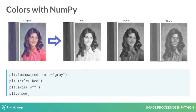We can also display them using the gray color map, specifying it with the cmap attribute of the imshow function. We can still see the different intensities along the images, one for each color — the red, green, and blue.